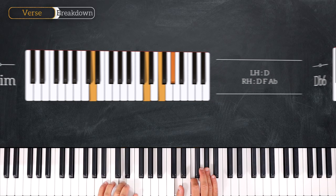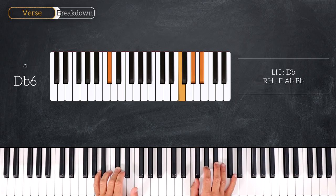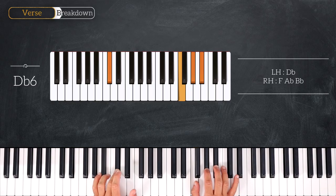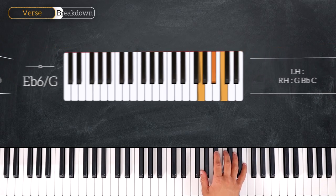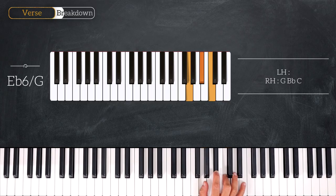Which is going to be resolved into this Db6 chord, playing Db on the left hand and F, Ab, Bb on the right hand. Following this we'll play this Ab6 with the right hand only, playing G, Bb and C.